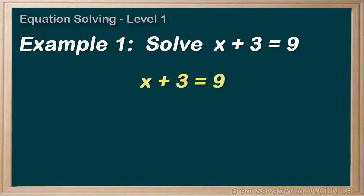x + 3 = 9. And our goal here is to get x all by itself, or isolate the variable. At this point, we can see that the x isn't by itself.